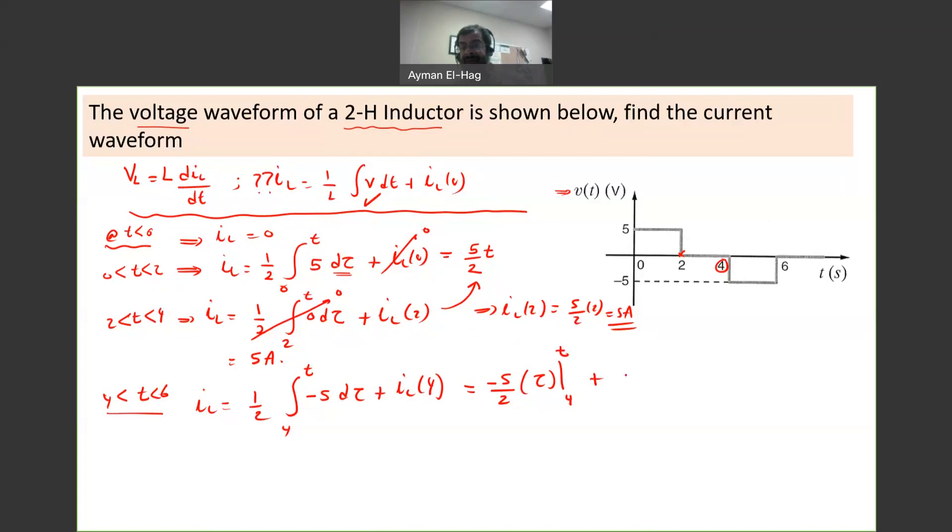Plus IL at 4, which is still 5. Why? Because nothing happened. From 2 to 4, the current was equal to 5. So this equals minus 5 over 2 T, plus 10 plus 5. So it is minus 5 over 2 T, plus 15.